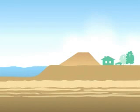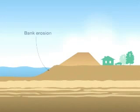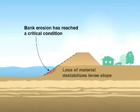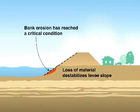I'd like to show you a different viewpoint. This can be a 10-foot levee, 20-foot, 30 or 40-foot. Bank erosion starts on the bottom and reaches a critical stage which causes loss of material, destabilizing the levee slope.